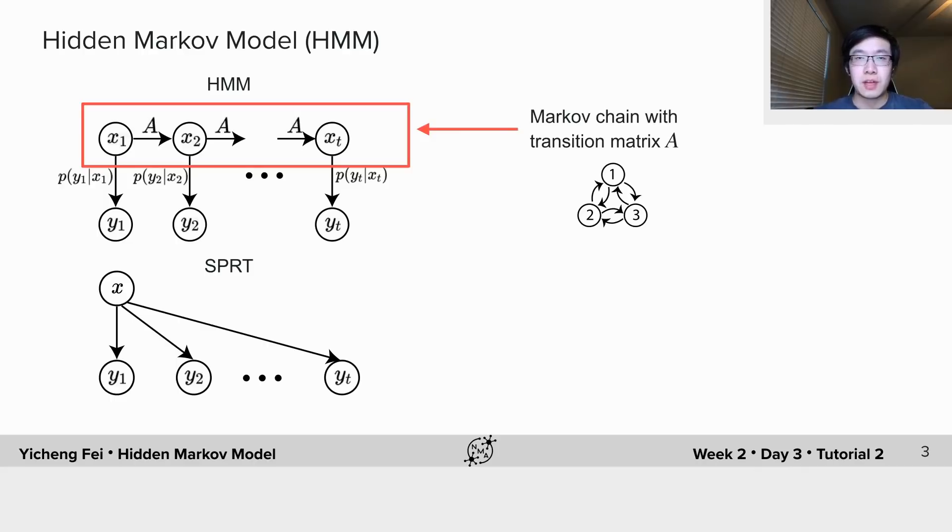Different from the sequential probability ratio test, or SPRT, we covered in tutorial 1, now the latent state is no longer fixed over time. Instead, we have a full dynamics.